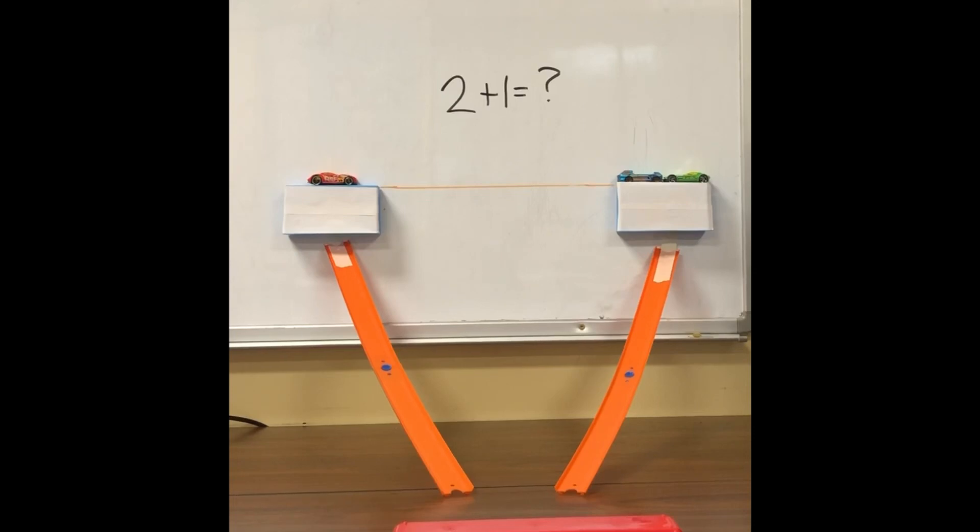So we are going to use our car tracks. I have one car on this side and two cars on the other side. When we race them down the tracks and they crash into each other, we will get our total sum to find the unknown number.